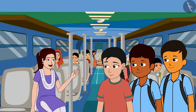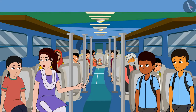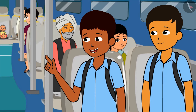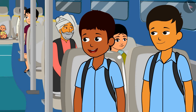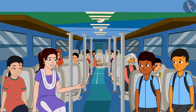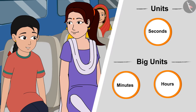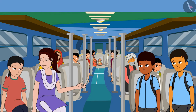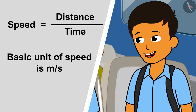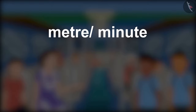Hey kids, let the driver brother drive the bus carefully. Tell me, how many minutes are there in one hour? 60 minutes. And your question was, how much distance would the bus cover in a minute? 60 minutes to an hour — so if this bus is covering a distance of 60 km in an hour, it means that it will cover 1 km in one minute. Correct answer! Do you know how the units are related to each other? The basic unit of time is seconds, and the bigger units are minutes and hours. And what is the basic unit of speed? Because speed equals distance divided by time, meter per second is the basic unit of speed. And it is also expressed in other units: meter per minute or kilometer per hour.